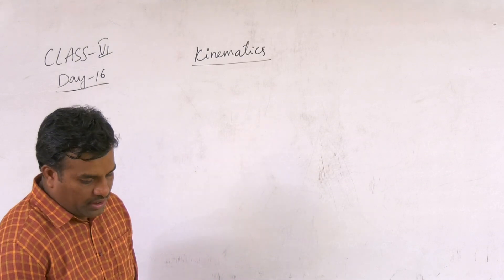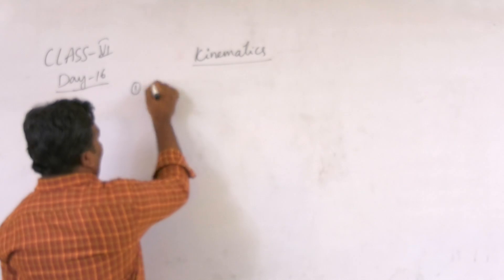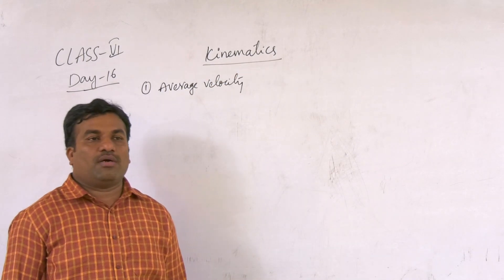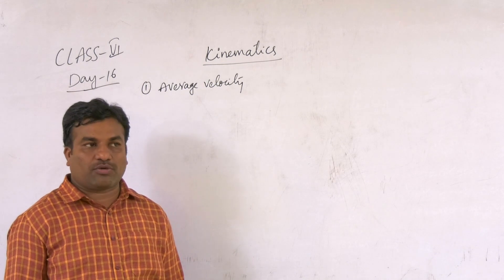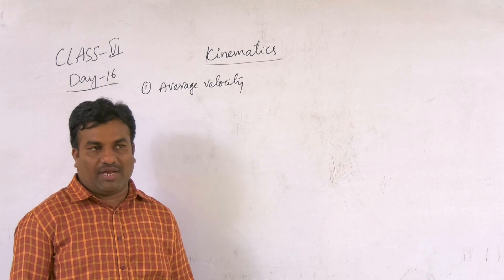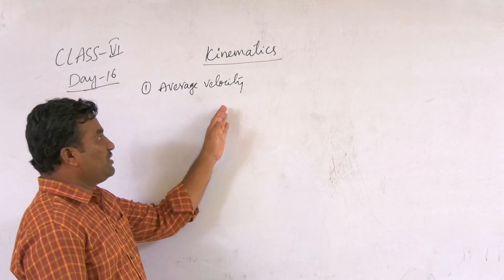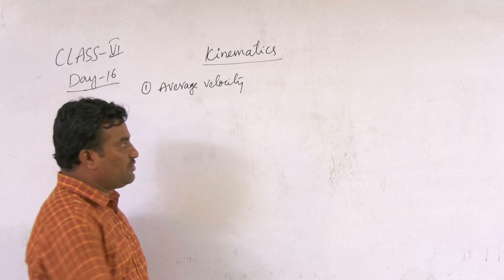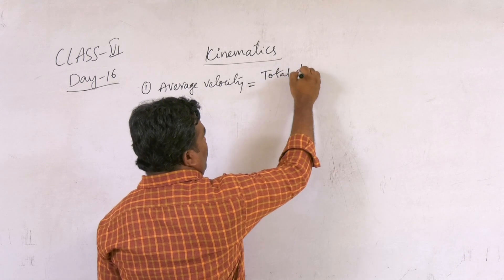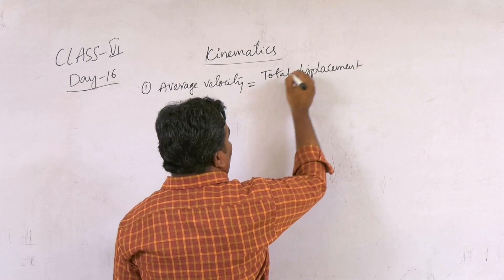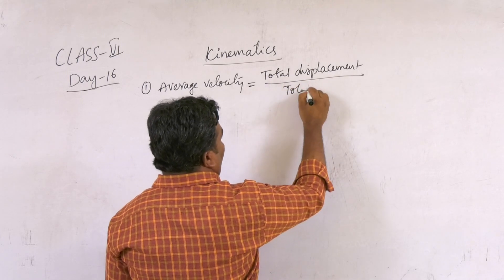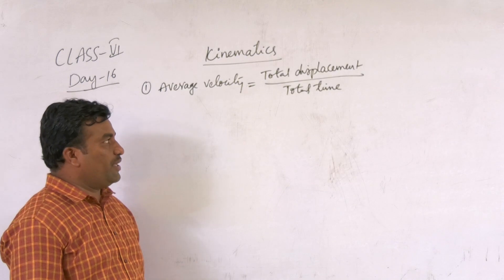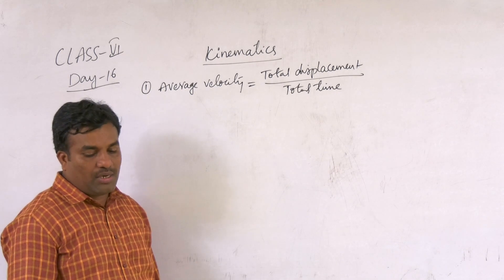The first question we are discussing is about Average Velocity. Average Velocity means — as you already know — velocity can change with respect to time. At different positions, you get different velocities. So when the velocity changes at different time intervals, we take the average. That is called Average Velocity. Average Velocity means total displacement divided by total time taken. The ratio of total displacement to total time is called Average Velocity.